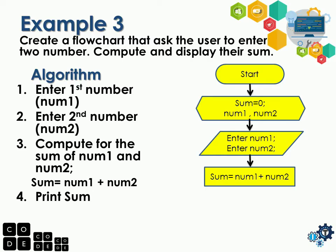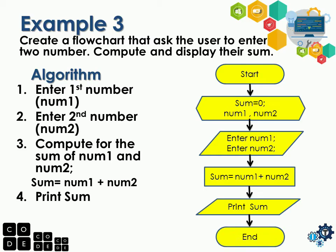After getting the sum, we have the word 'print', so we use the output block. Print sum, then next is the terminal block 'End'. If there's nothing else needed by the problem, that is the End. Don't forget to place the Start and the End — we need those for our flowchart.